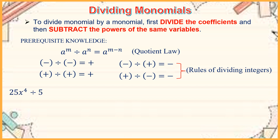Now let us have an example: 25x to the fourth divided by 5. Let us divide the coefficients — 25 divided by 5 equals 5. Then keep x to the fourth. So the final answer is 5x to the fourth.